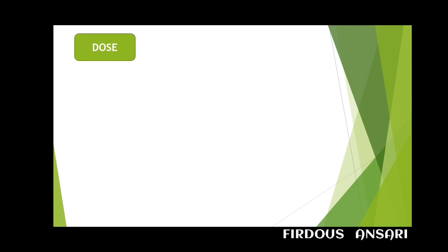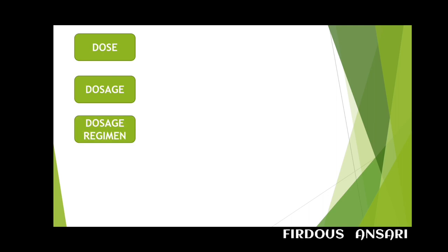First, what is a dose? A dose is the quantity of medicine to be taken or recommended to be taken at a particular time. Secondly, what is dosage? Dosage is the size of the dose or the frequency by which the medication has to be taken — for example, one spoonful of drug taken three times a day, or not to exceed the recommended dose.